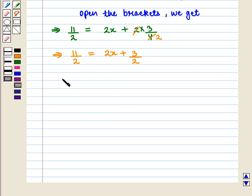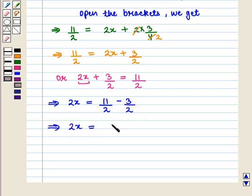We can also write this equation as 2x + 3/2 = 11/2. Now we keep the x term on one side and the constant terms on the other side of the equation and we get 2x = 11/2 - 3/2, which implies that 2x = (11-3)/2, that is 8/2.